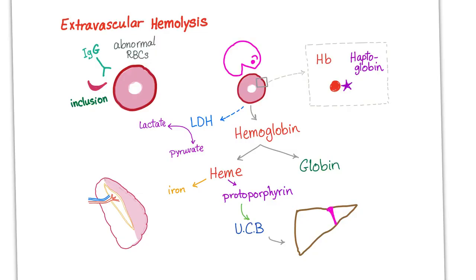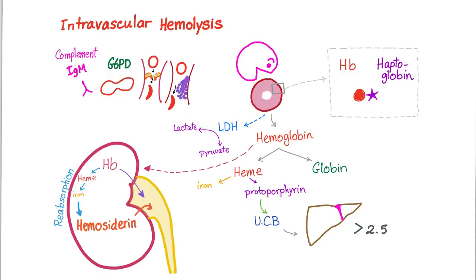Here is the process of extravascular hemolysis — please go to my video on extravascular hemolysis for details. And here is the intravascular hemolysis — again, for details watch my video on intravascular hemolysis. What is unique here is hemoglobinuria and hemosiderinuria: both of them are excreted in the urine.